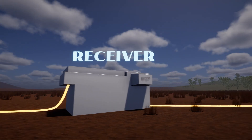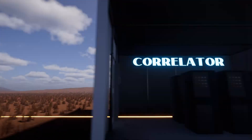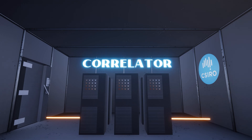The signals are then processed on-site by the MWA's correlator. The correlator is a huge computer bank which performs the mathematical operations to combine the data from all the tiles in the MWA telescope.